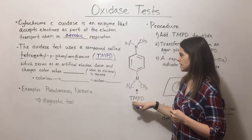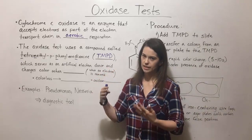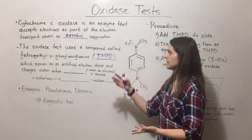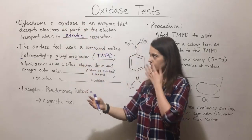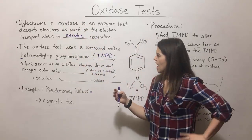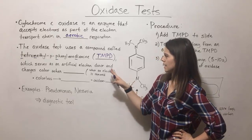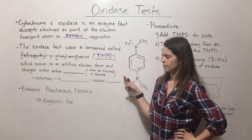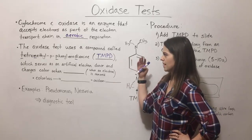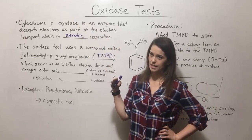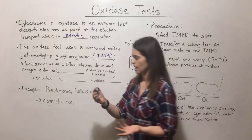TMPD serves as an artificial electron donor — something that can donate electrons to cytochrome C oxidase. What ends up happening is that the TMPD can change color. It has electrons that it can donate to cytochrome C oxidase, and when it donates those electrons, it is oxidized.